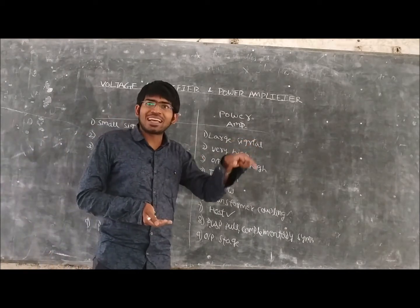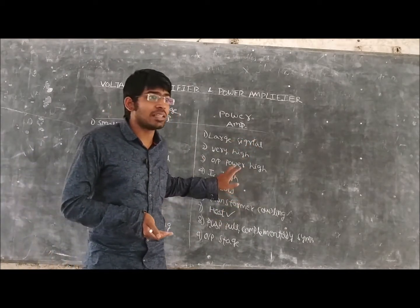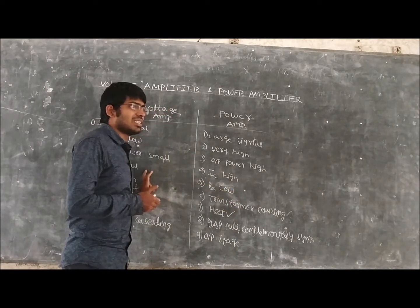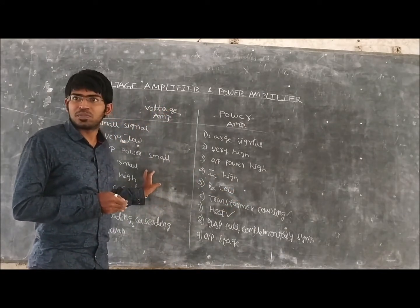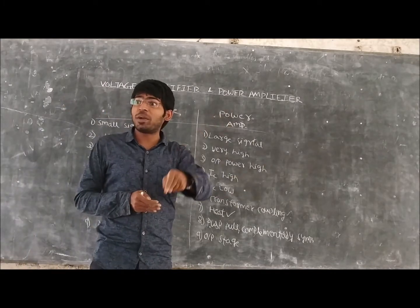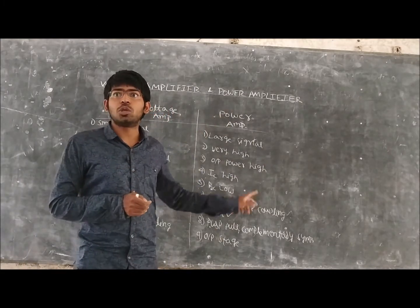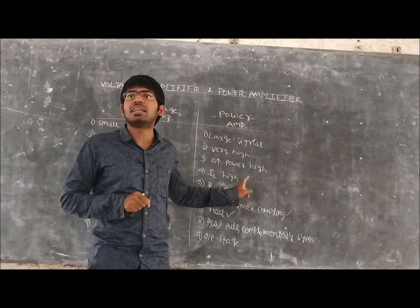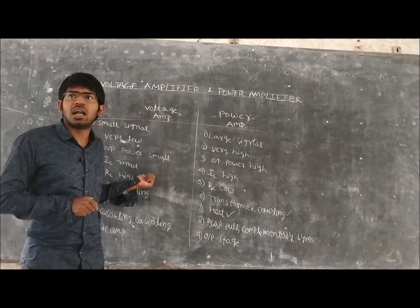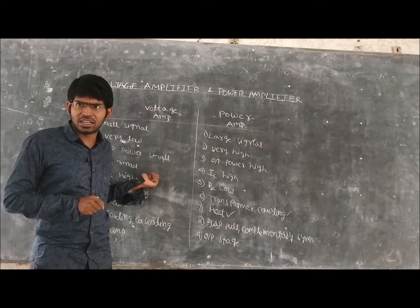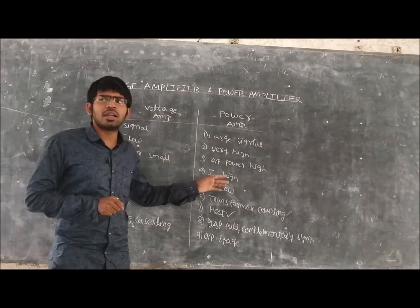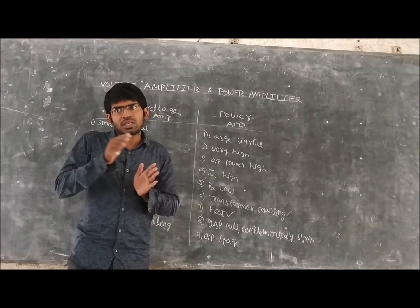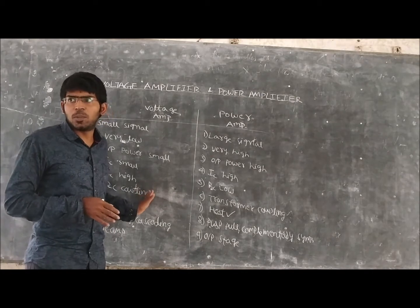Because we are expecting the collector current to be high in the power amplifier, we keep the collector resistance low. Whereas in the voltage amplifier, the collector resistance is high. We are also expecting the power to be transferred properly, so impedance matching is a very required criterion in the power amplifier, whereas it is not that much required in the voltage amplifier. For the power amplifier, we use transformer coupling from one stage to the next, whereas for the voltage amplifier we use RC coupling.